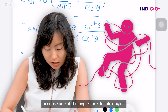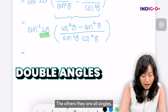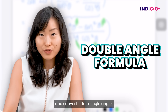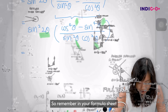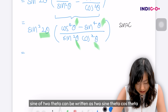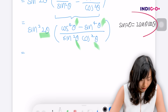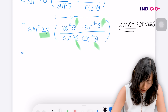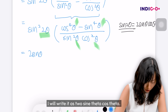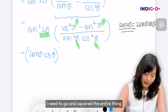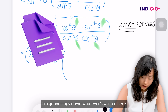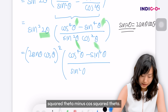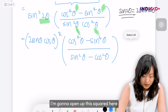The next step — I'm kind of stuck with the manipulation because nothing quite cancels, since one of the angles is a double angle and the others are all single angles. So I'm going to use the double angle formula for sine to convert it to a single angle. From the formula sheet: sine of two theta equals two sine theta cos theta. That means sine squared two theta becomes two sine theta cos theta, all squared.